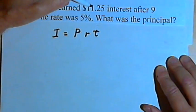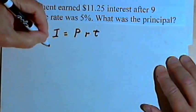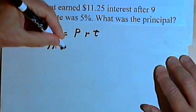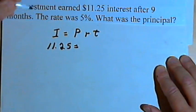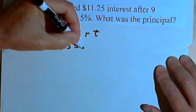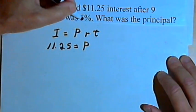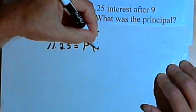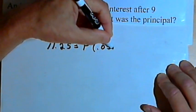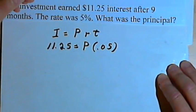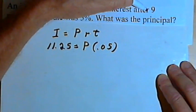So we know the interest, that was $11.25. We're looking for the principal, so we'll just leave that as P. We know the rate was 5%. I'm going to write the rate as a decimal, 0.05, and the time was nine months.